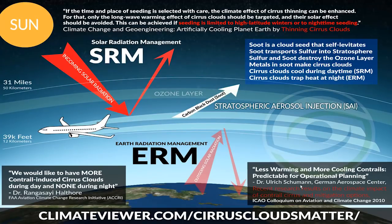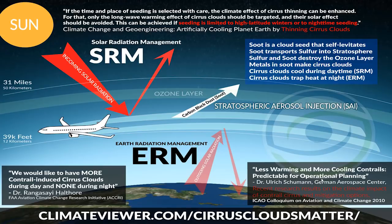Dr. Ulrich Schumann from the German Aerospace Center wrote a paper called 'Recent Research Results on Climate Impact of Contrails, Cirrus, and Mitigation Options' at the International Civil Aviation Organization Colloquium on Aviation and Climate Change, 2010. He said: 'We want less warming and more cooling contrails, predictable for operational planning.' He went on to invent the Contrail Cirrus Prediction Tool, which is wrapped into the FAA's NextGen transportation system and their Aviation Environmental Design Toolkit, AEDT — predicting when they're going to make clouds, whether they're going to heat or cool the planet.